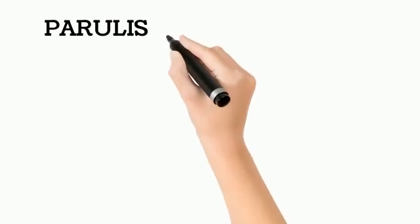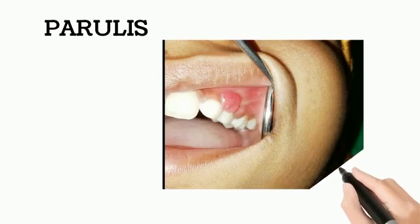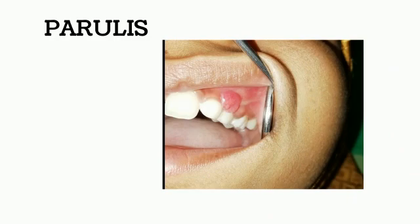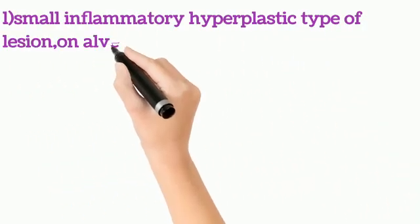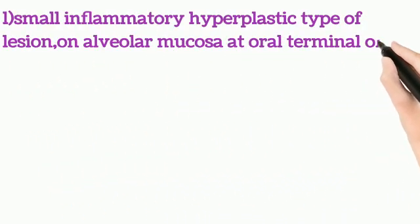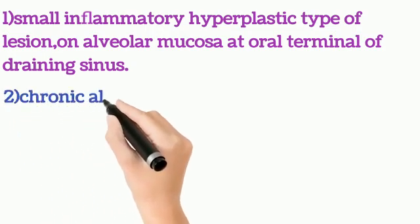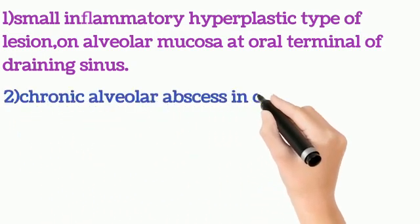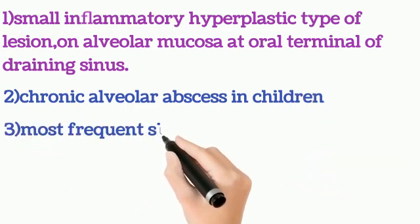Hi friends, welcome back to our channel MedicEasy. Today our topic is about parulis. Parulis is a small inflammatory hyperplastic type of lesion that develops on the alveolar mucosa at the oral terminal of a draining sinus. This lesion usually accompanies chronic alveolar abscess in children.